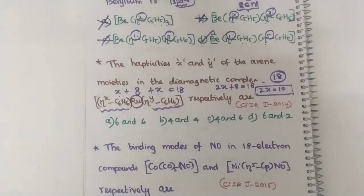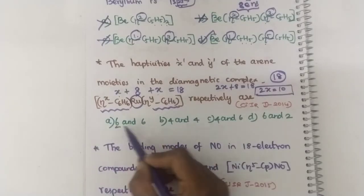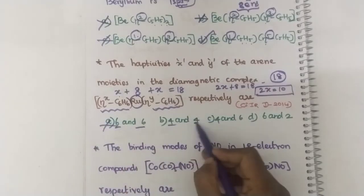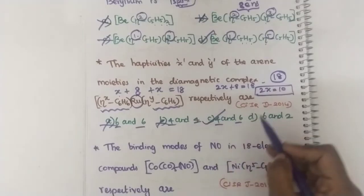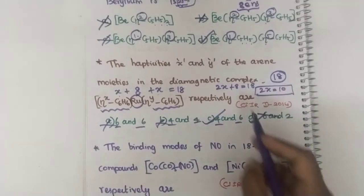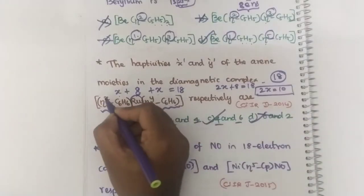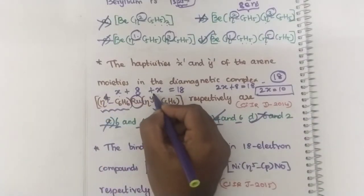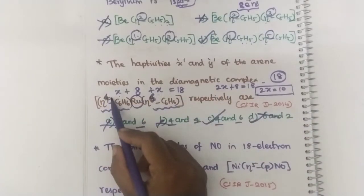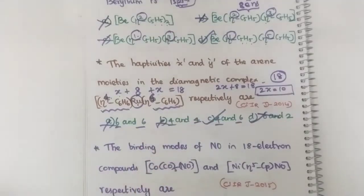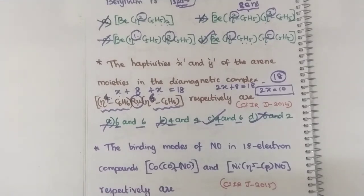The two C₆H₆ ligands should give 10 electrons total. Looking at the options: 6 + 6 = 12 (wrong), 4 + 4 = 8 (wrong), 4 + 6 = 10 — this is right. If one donates 4 electrons and the other 6 electrons: 4 + 8 + 6 = 18. Hence it obeys the 18-electron rule and will be stable. So if nothing is mentioned, you can take the complex as obeying the 18-electron rule to solve the question.